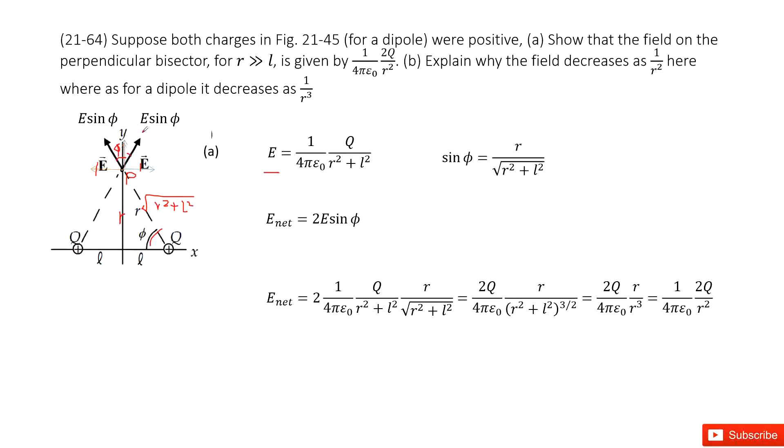This side has E sin φ, this side length is E sin φ. So the E net is just 2 times E sin φ.